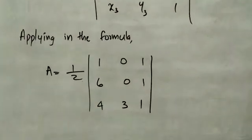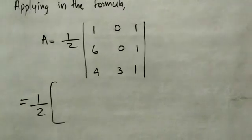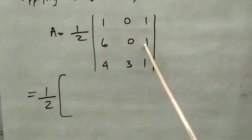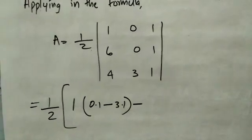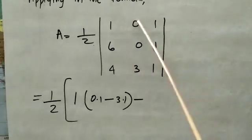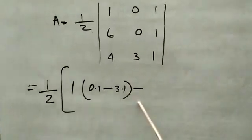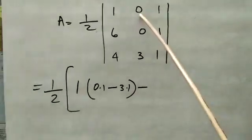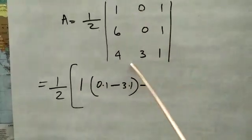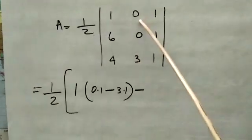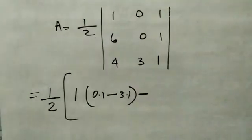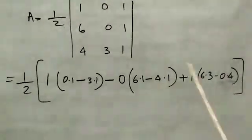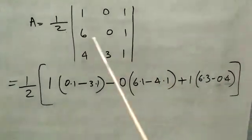We apply the coordinates to the determinant formula and solve. The expansion gives: 6 into (3 minus 0) minus 0 into 4. We use the alternating sign pattern: plus, minus, plus.